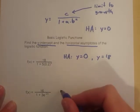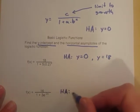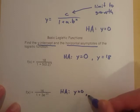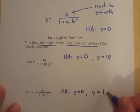If we're looking at the second example, our horizontals would be y equals 0 and y equals 16.